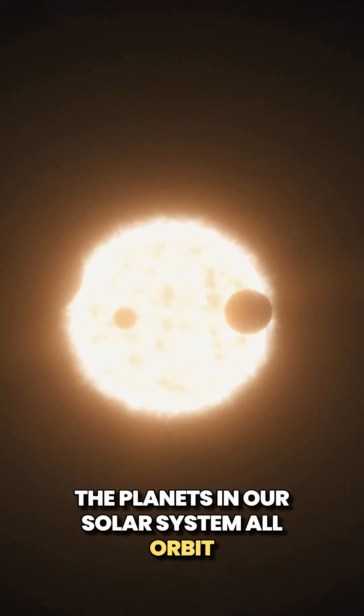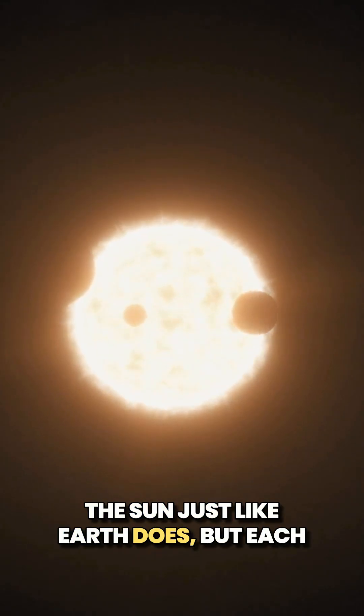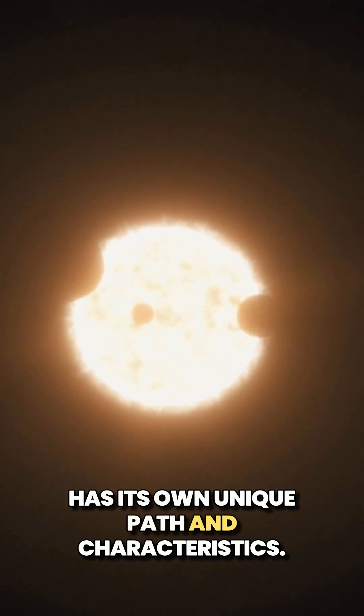The planets in our solar system all orbit the sun, just like Earth does, but each has its own unique path and characteristics.